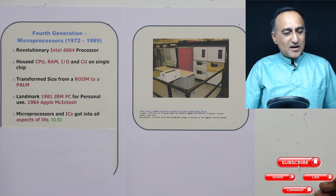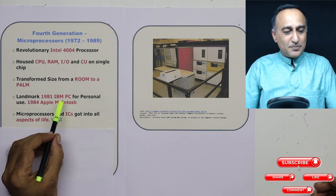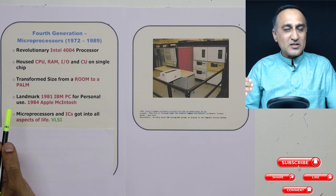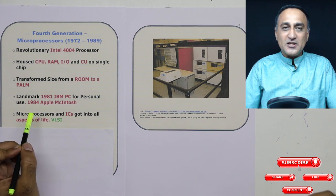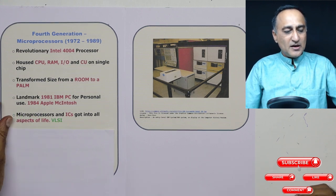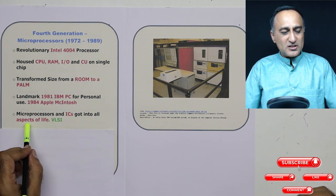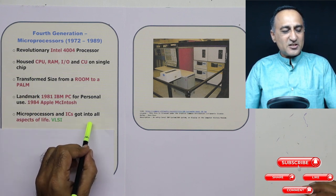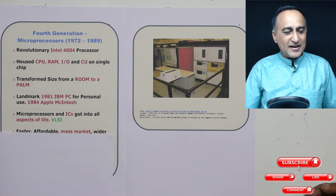In 1981, IBM released personal computers for home use, marking a transformation from offices to homes. In 1984, Apple launched its historic Macintosh machines. Microcontrollers also emerged, and microprocessors began to get into every area of life — washing machines, microwave ovens, dishwashers, and cars.